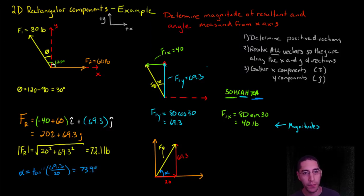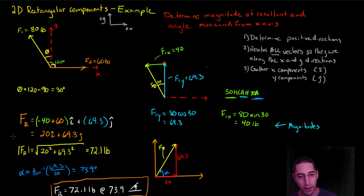So, my final answer would be this. My resultant is 72.1 pounds at 73.9 degrees up from the horizontal axis. Your instructor might want you to write it in terms of a vector form, which would be this, or a magnitude and an angle, which would be this one. And there's only one more thing I want to say in this video.